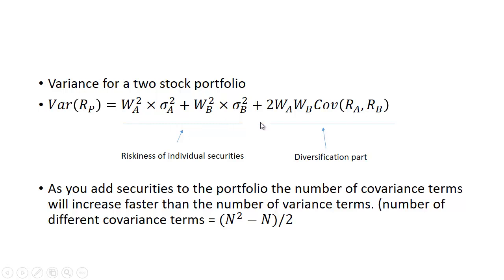If you added a third security C, you'd have the original terms plus WC squared times the variance of C, but then you'd also have covariance terms between A and B, between A and C, and between B and C. So you added one more security but you added two more covariance terms.